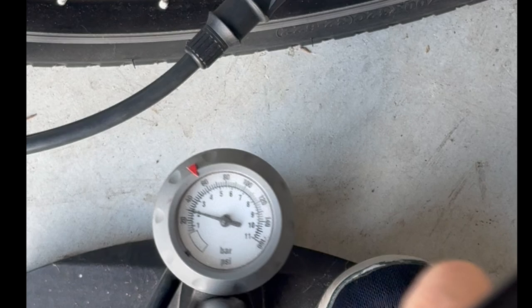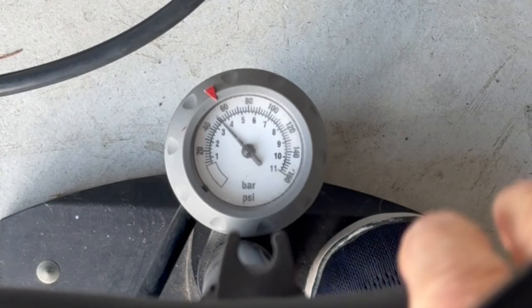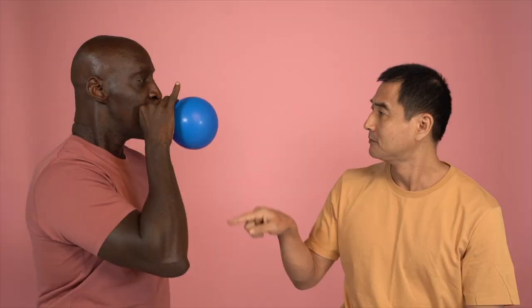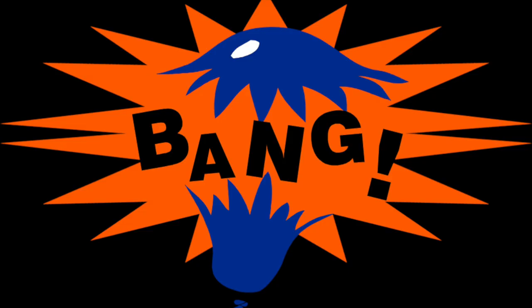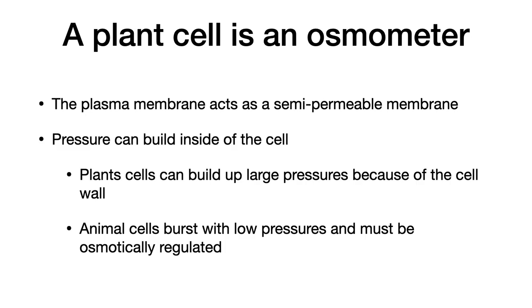Like a plant cell, this inner tube with a tire around it continues to build up pressure as it's inflated. Pressure can build up inside the cell as the cell wall restricts the cell from expanding, allowing for pressure to build up. However, an animal cell without a cell wall, like this balloon, will continue to expand as it is inflated until it bursts. So animal cells must be osmotically regulated.